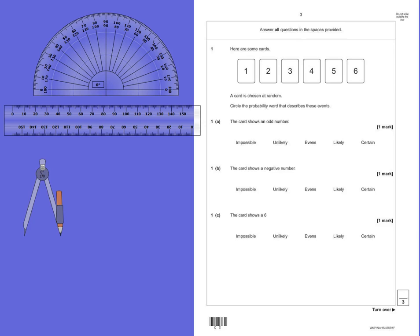So for question 1a, the card shows an odd number. An odd number is anything that is not divisible by 2 - it's not in the 2 times tables. So the options we have here are 1, 3 and 5. So 3 of the cards are odd.